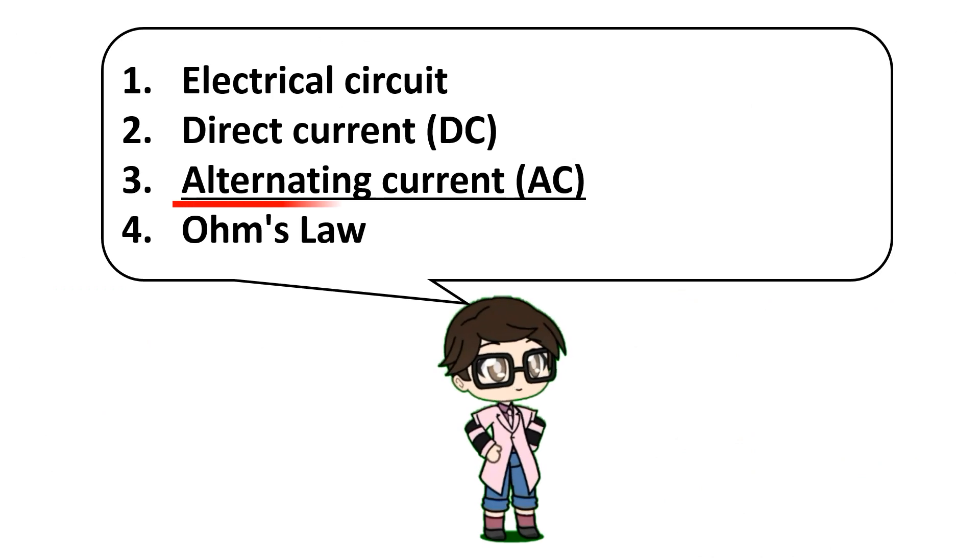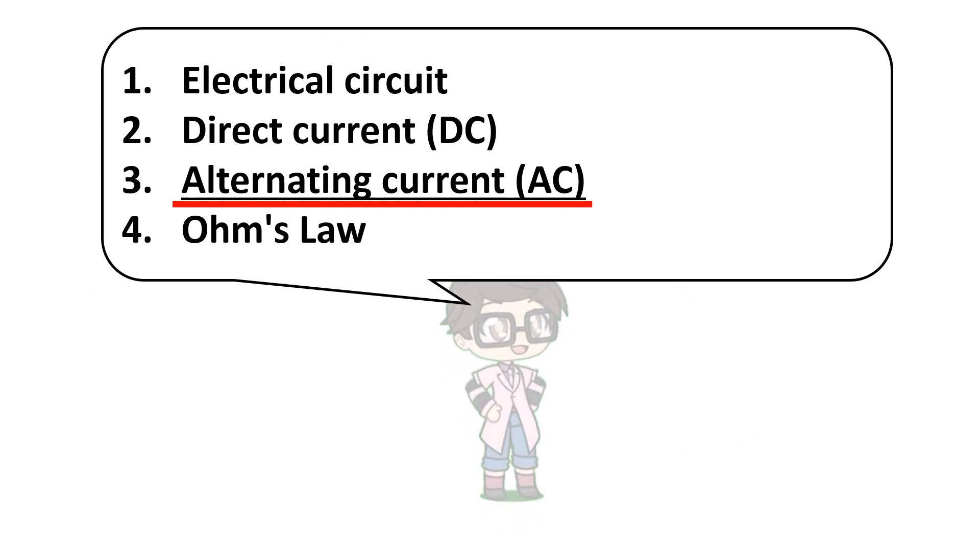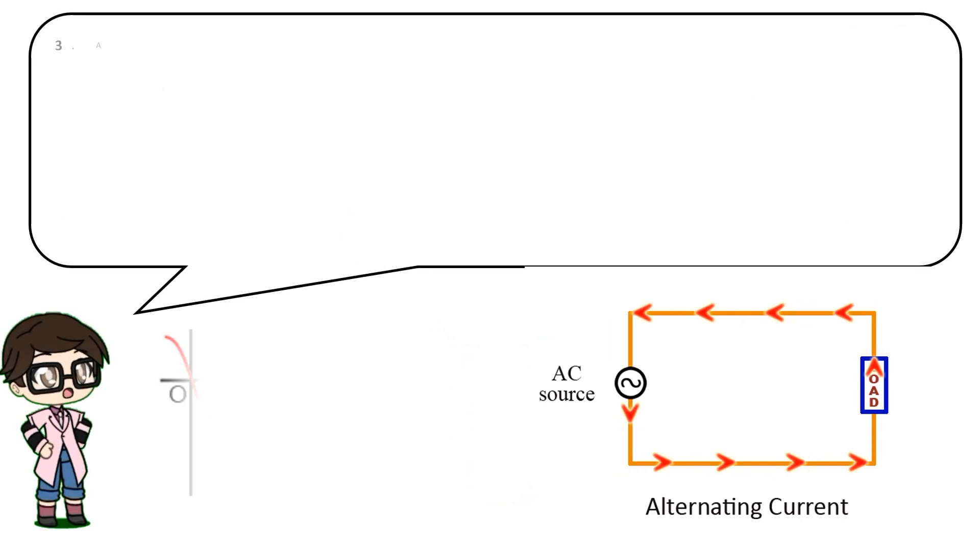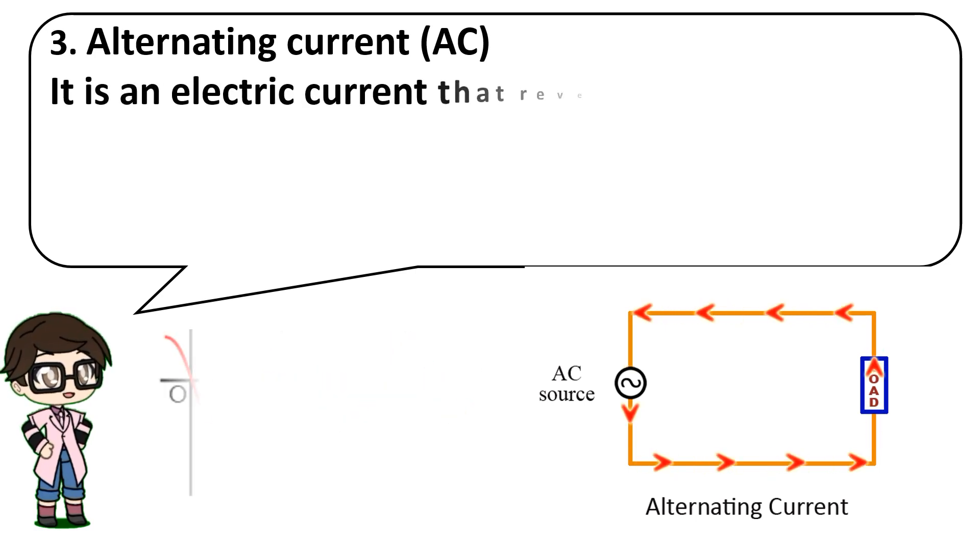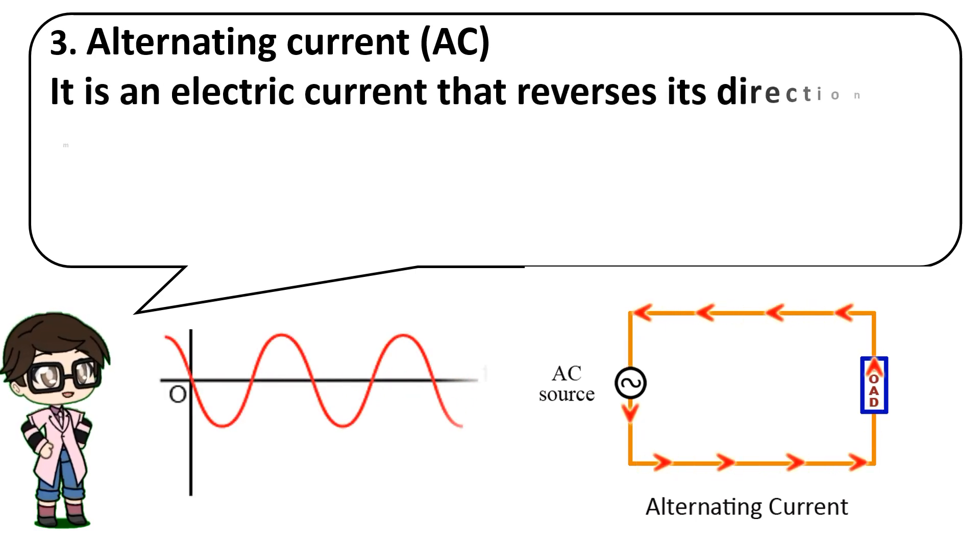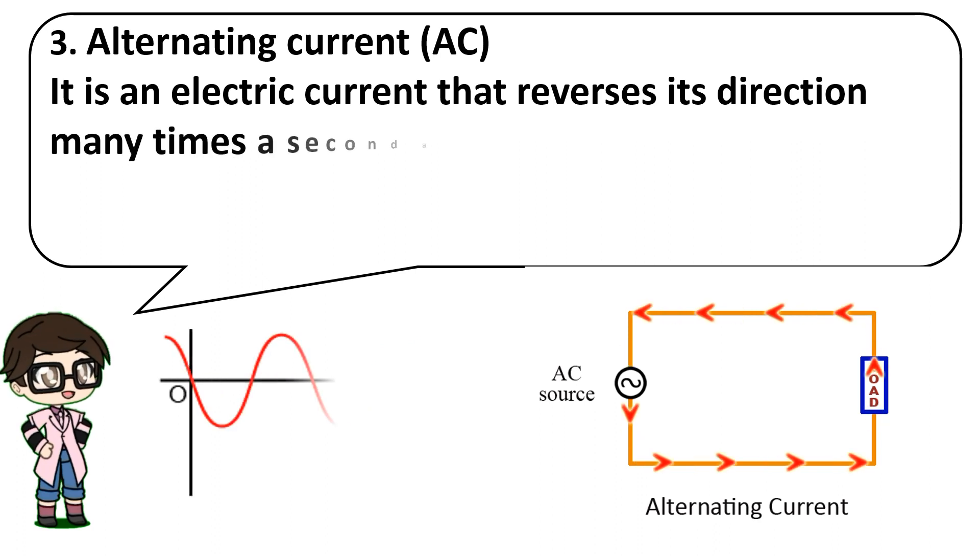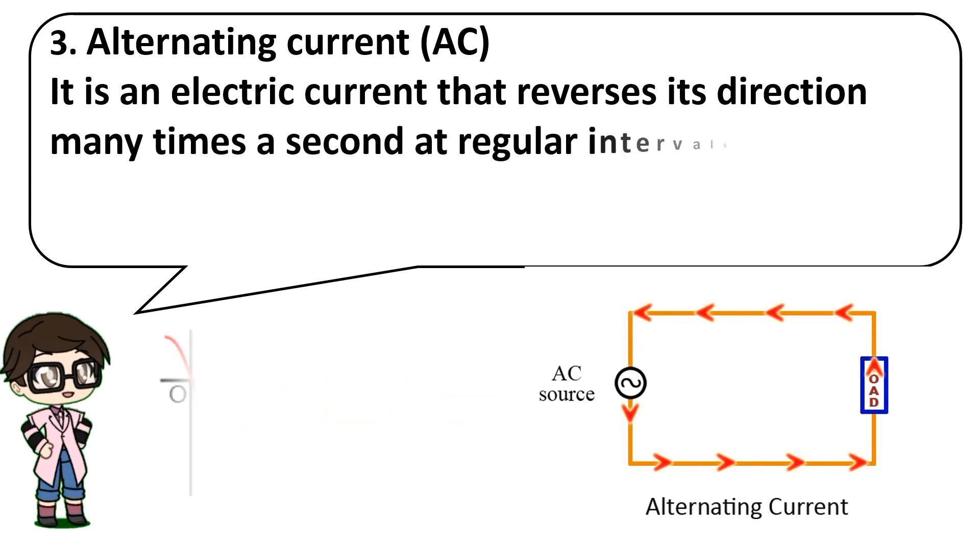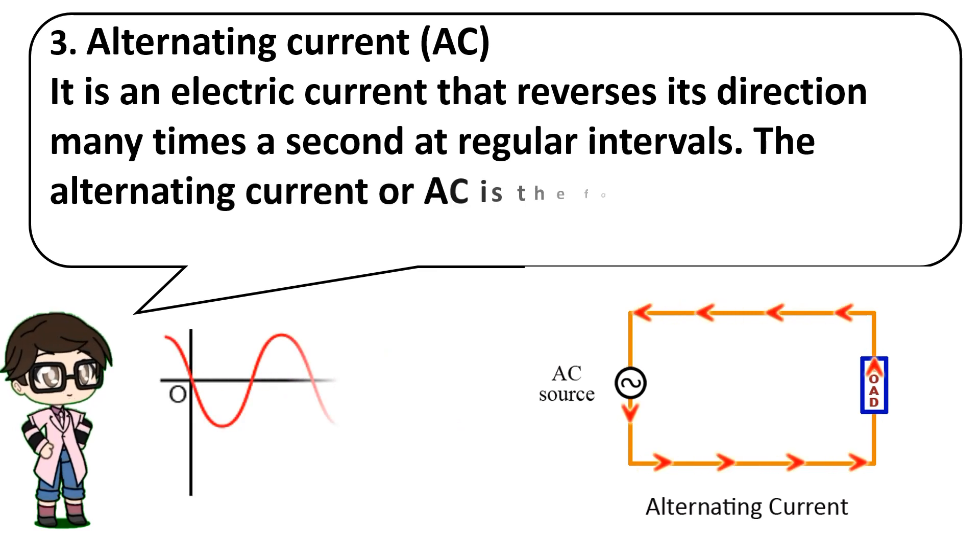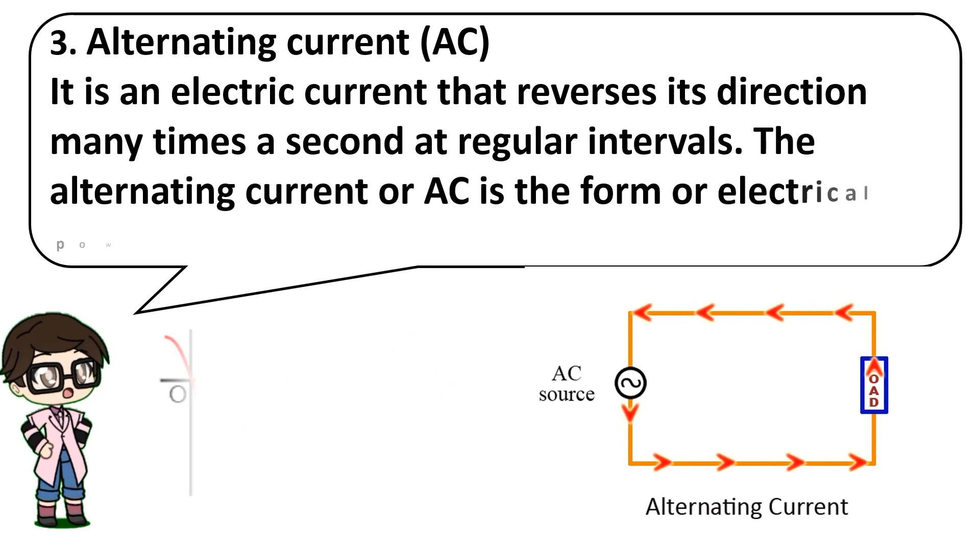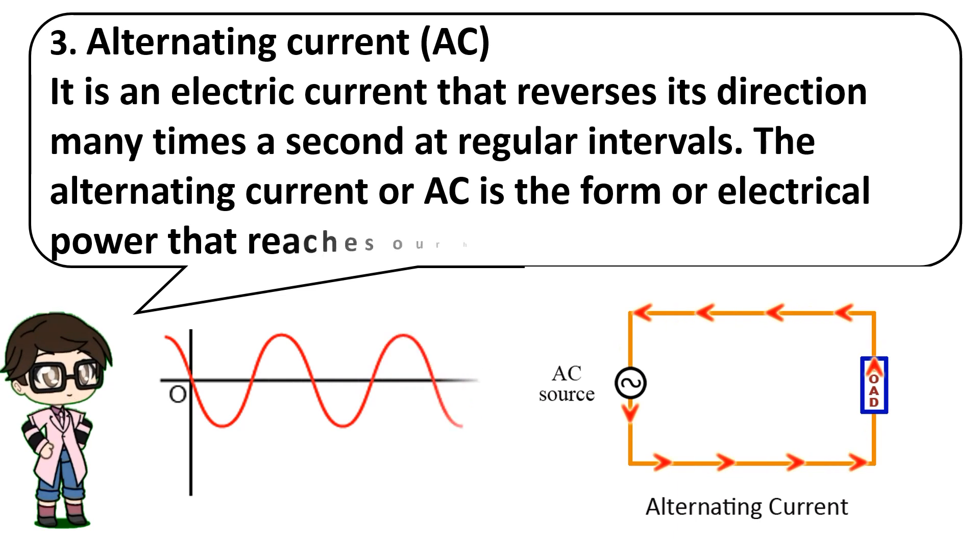Next is alternating current. Alternating current: it is an electric current that reverses its direction many times a second at regular intervals. Alternating current or AC is the form of electrical power that reaches homes.